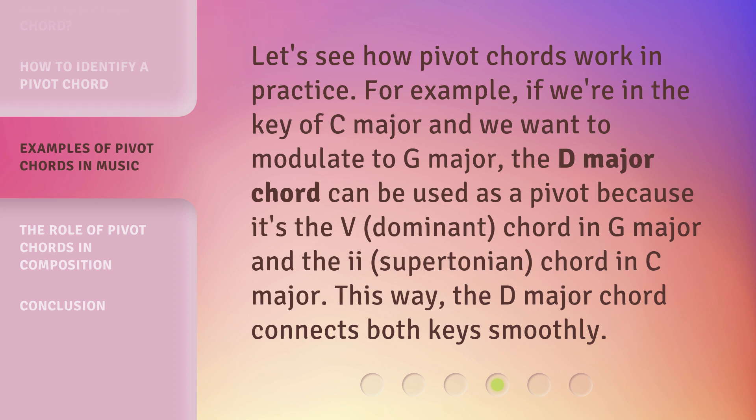Let's see how pivot chords work in practice. For example, if we're in the key of C major and we want to modulate to G major, the D major chord can be used as a pivot because it's the V (dominant) chord in G major and the II (supertonic) chord in C major. This way, the D major chord connects both keys smoothly.